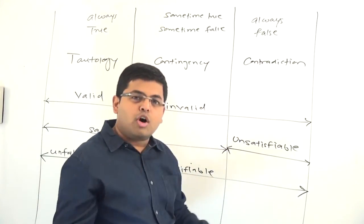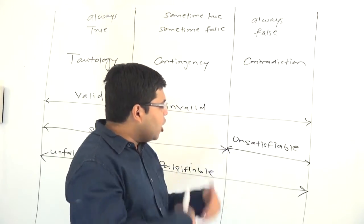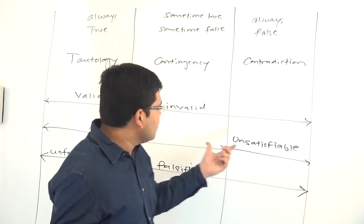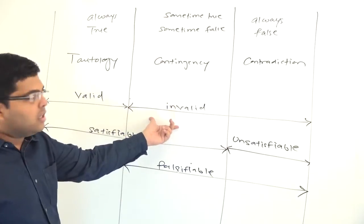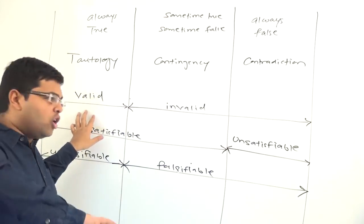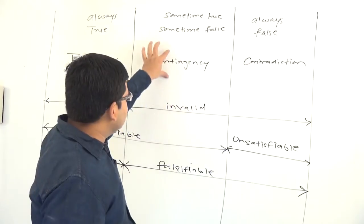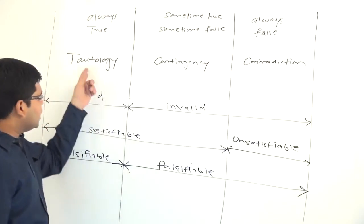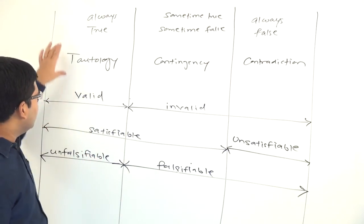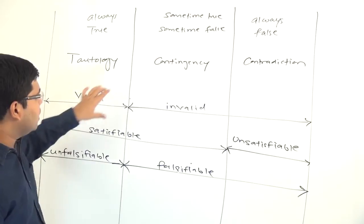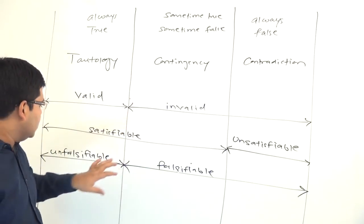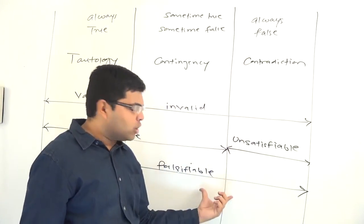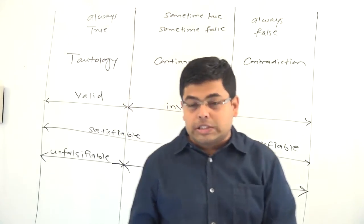Contradictions are always false; they cannot be made true, they cannot be satisfied, and that is why they are called unsatisfiable. A formula which is not a tautology will be called invalid; therefore contingencies are invalid and contradictions are also invalid. A formula which can be made true is satisfiable, so tautologies and contingencies are satisfiable. Contingencies and contradictions can both be made false and that is why they are called falsifiable.